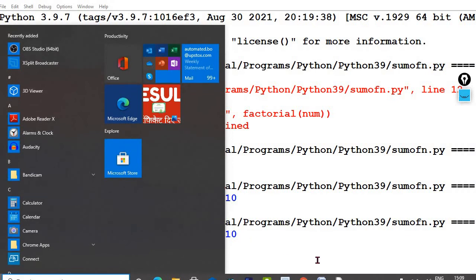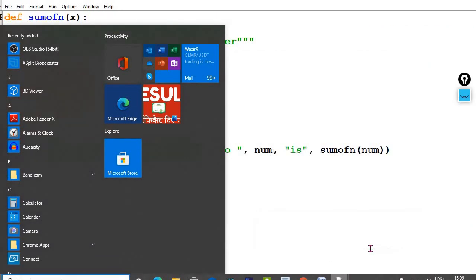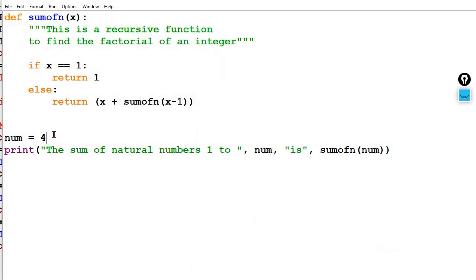Now I am going to change the program. How I can change? In place of 4, I write 5. Now this program will find out the sum of 5 natural number. It means 1 plus 2 plus 3 plus 4 plus 5. Now it will calculate the sum of 5 natural number. Can you find the answer?